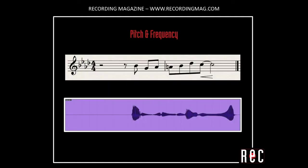Of course, most musicians don't speak audio. In the music realm, frequency is more commonly referred to as pitch. In the Western musical tradition, we take this one step further and assign note values — such as A, F sharp, and B flat — to specific frequencies. In this example, I will play the line shown here on trumpet. Higher pitch sounds are, of course, higher in frequency, and lower pitch sounds are lower in frequency.